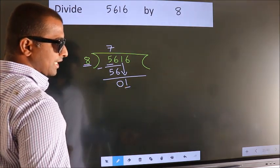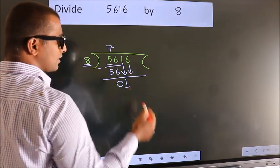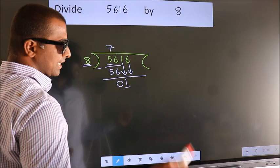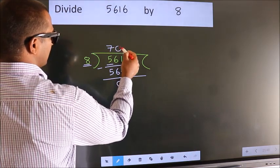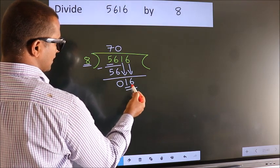So, we should bring down the second number. And the rule to bring down the second number is, put 0 here. Then only we can bring down this number. So, 16.